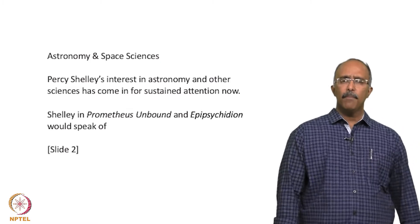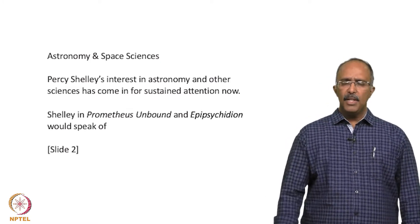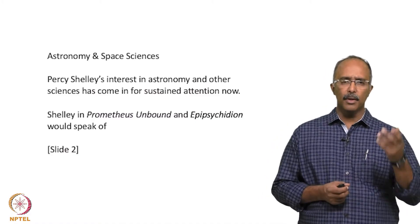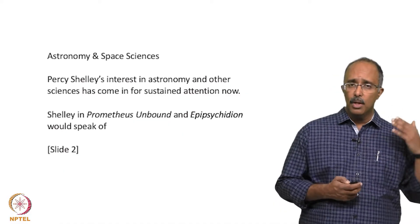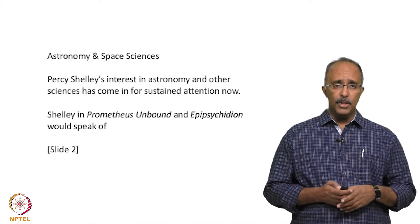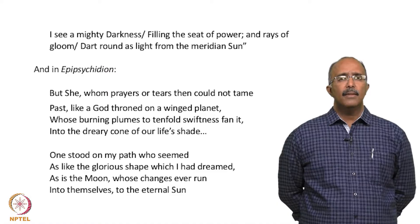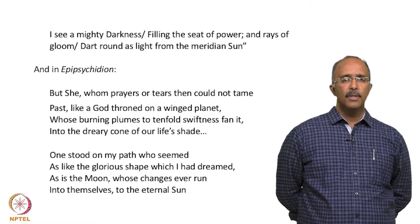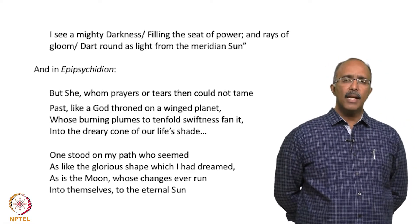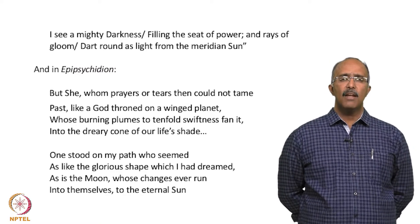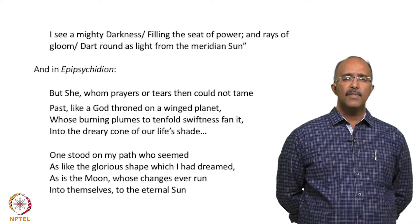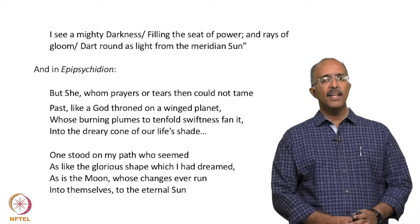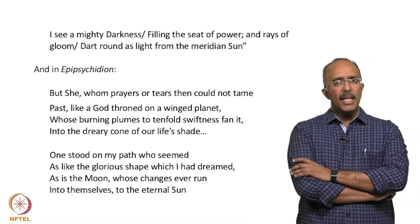We will move on to other sciences, specifically astronomy and space sciences. Mary Shelley's husband, the poet Percy Shelley, had a long-lasting interest in astronomy and other sciences, and it has now come in for sustained attention. In Prometheus Unbound and Epipsychedion, Shelley would say several things which draw directly upon scientific theories: 'I see a mighty darkness, filling the seat of power and rays of gloom, dart round as light from the meridian sun.' In Epipsychedion, Percy Shelley would write: 'But she whom prayers or tears then could not tame, past like a god throned on a winged planet, whose burning plumes to tenfold swiftness fan it, into the dreary cone of our lives' shade. One stood on my path, who seemed as like the glorious shape which I had dreamed, as is the moon, whose changes ever run into themselves, to the eternal sun.'